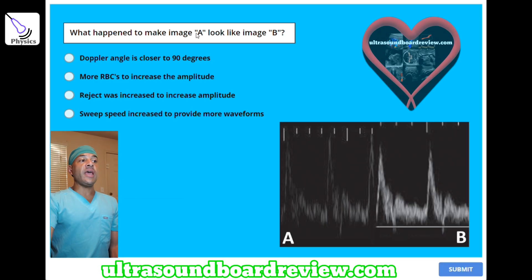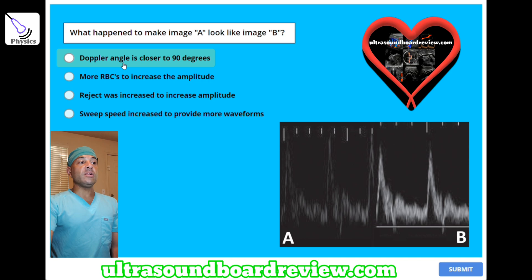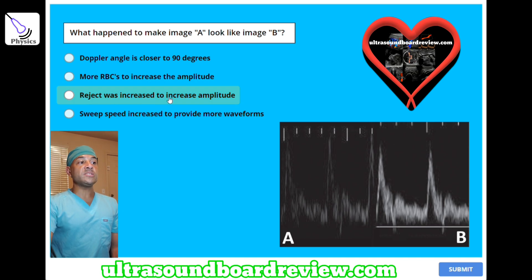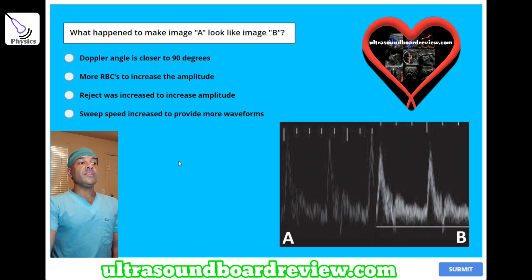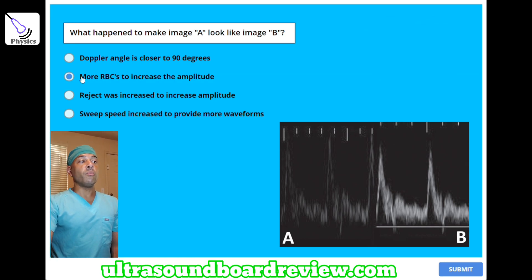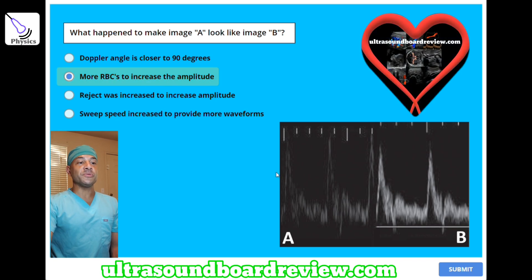What happened to make image A look like image B? A) Doppler angle is closer to 90 degrees, B) more red blood cells to increase the amplitude, C) reject was increased to increase the amplitude, or D) sweep speed increased to provide more waveforms? The answer is B, there are more red blood cells to increase the amplitude.